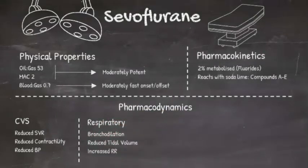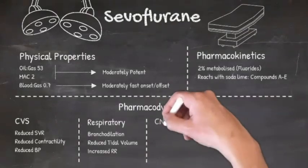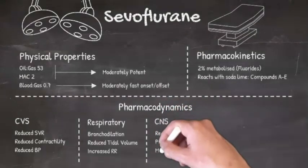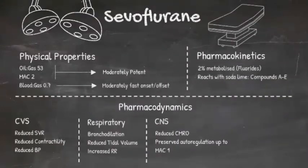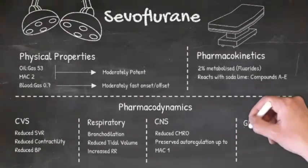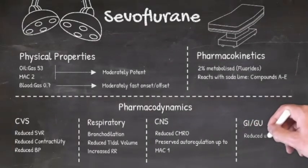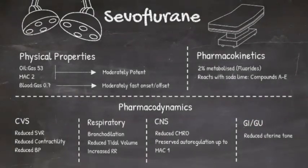As we've already mentioned, all volatile agents reduce cerebral metabolic rate for oxygen. However, below a MAC of 1, the body's autoregulation of cerebral blood flow is actually maintained. It's only if you go above a MAC of 1 that cerebral blood flow rises. In terms of GU effects, just like isoflurane, sevoflurane reduces uterine tone.